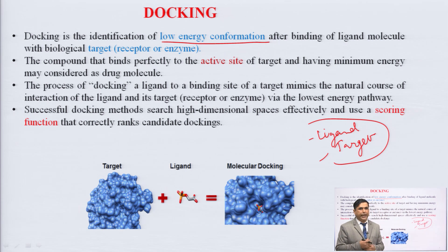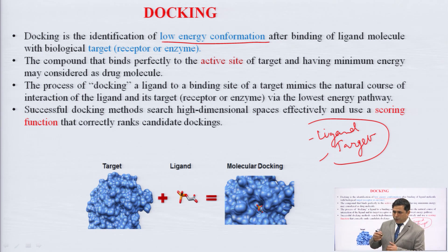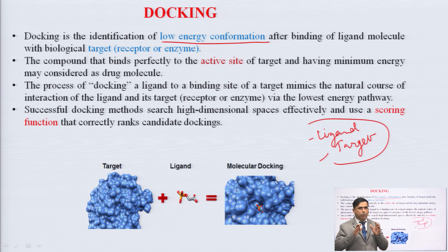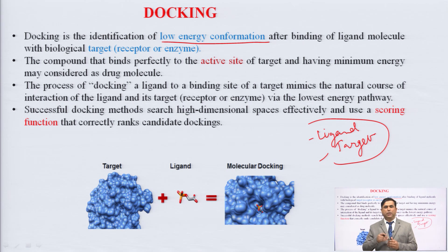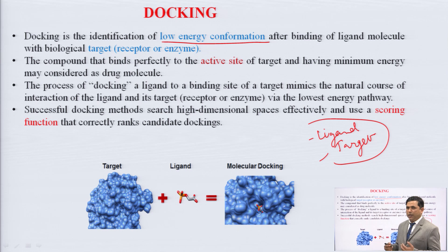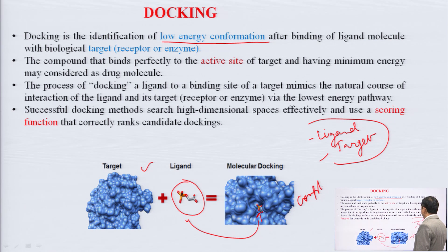When the interaction of the ligand with the target occurs in a very good fashion, it gives a very good score called the scoring function. This allows us to correctly rank different molecules — suppose we have a set of 20, 30, or 50 ligands — we can identify the best ligands with the help of the scoring function. A good score ultimately means the ligand may be good. This is the example of the target and the ligands interacting to form a complex in the form of molecular docking.